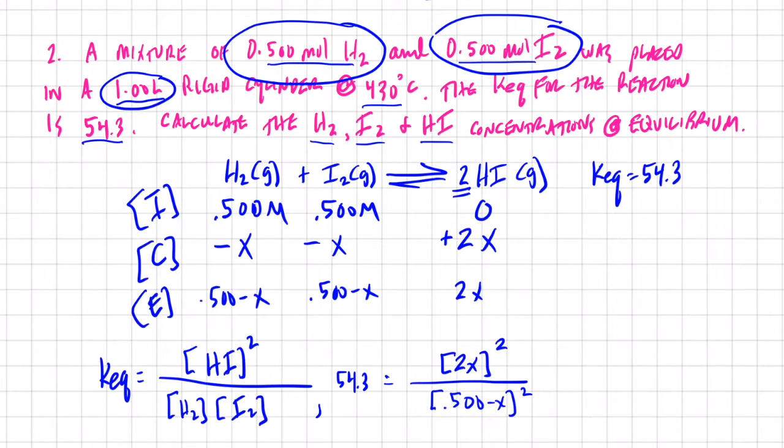So if I square root both sides, I will end up with the following. Let's see what the square root of 54.3 is. 54.3 square root is 7.37. So we end up with 7.37 equals, and the square root of 2X quantity squared is 2X, and 0.5 minus X quantity squared is 0.5 minus X.